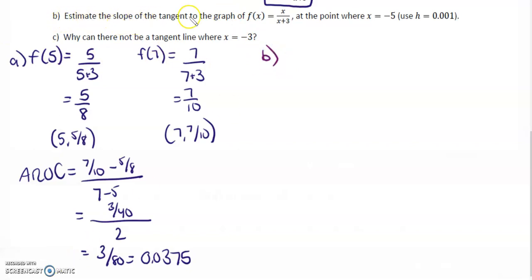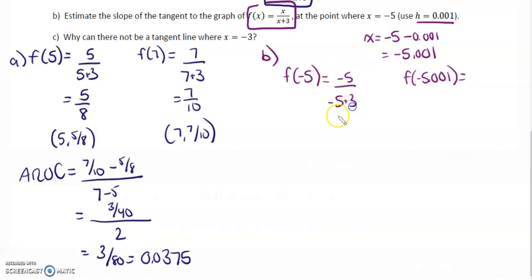Part b: estimate the slope of the tangent to the graph f of x equals x over x plus 3 at the point where x equals negative 5, using h equals 0.001. Let's do negative 5 minus 0.001, which gives us negative 5.001. Let's solve for f at negative 5.001. Negative 5 over negative 5 plus 3 is negative 5 over negative 2, which simplifies to 5 over 2.